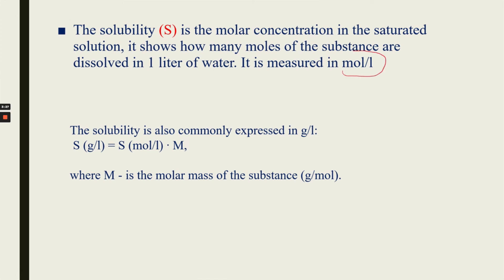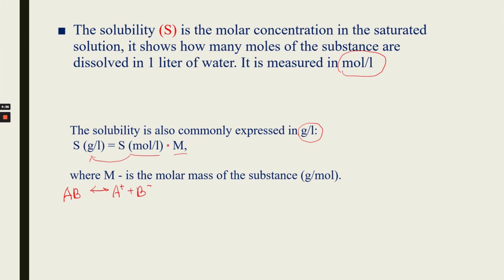From the solubility product you find solubility in moles per liter, but it is more practical to calculate it in grams per liter. To convert from mol/L to g/L you multiply by molar mass. Now let's write the heterogeneous equilibrium for a simple salt AB: there is equilibrium, and in the saturated solution we have cations and anions.